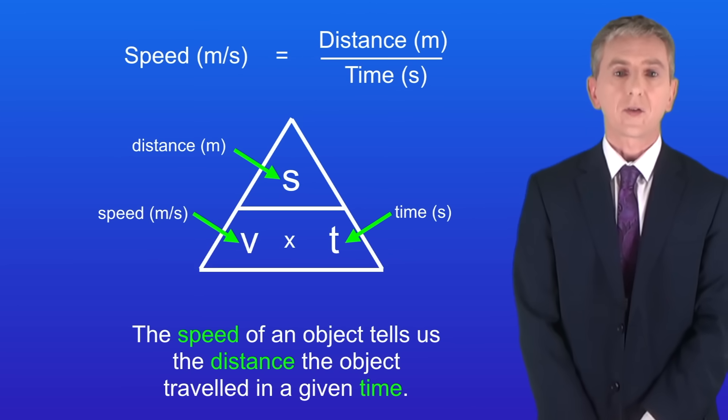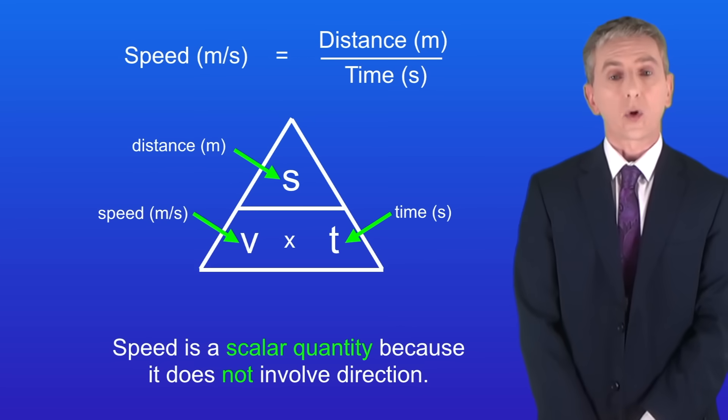Now the speed of an object tells us the distance the object traveled in a given time. Speed is a scalar quantity because it does not involve direction. I'm showing you the equation for speed here. The speed is the distance traveled divided by the time taken. You are not given this equation in the exam so you need to learn it.